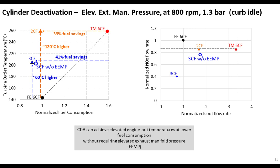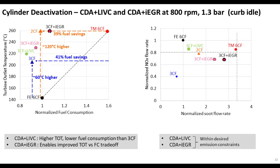During three-cylinder fired operation at this idle definition and speed, we're able to see the benefits of CDA without elevating the exhaust manifold pressure at all — you wouldn't need to squeeze a VGT or use an exhaust throttle. That doesn't mean you wouldn't want that capability on the engine for other operating conditions, but not necessarily having to implement elevated exhaust manifold pressure at idle could have some important implications for a million-mile engine.